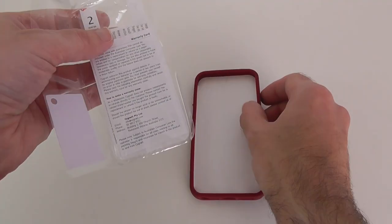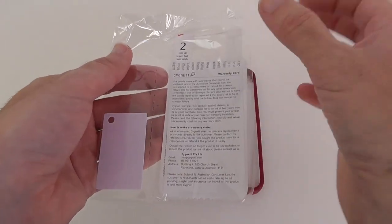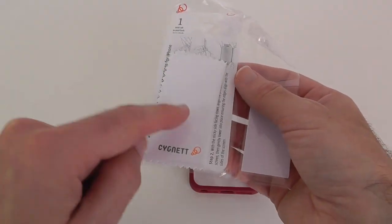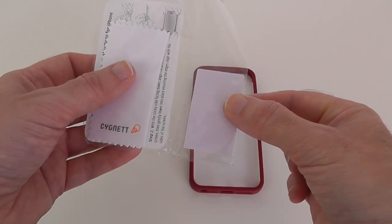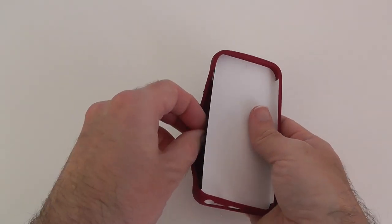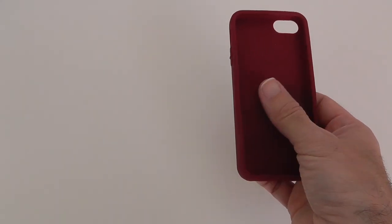Let's give you a little look at the bonus items first of all. We have got a screen protector, really good idea to fit a screen protector to your device, microfiber polishing cloth, applicator card to help you along the way installing that screen protector and then the case itself.